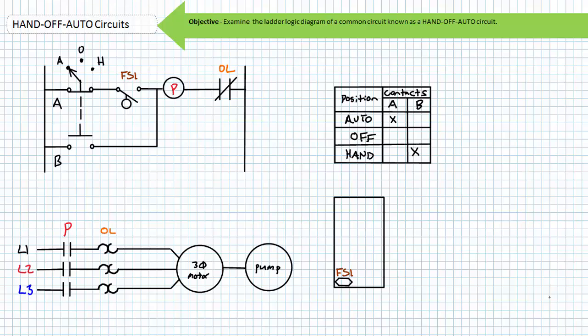The top rung of the ladder logic diagram contains the A contact of the selector switch, a normally open float switch, the P contactor coil, and the normally closed overload contacts.